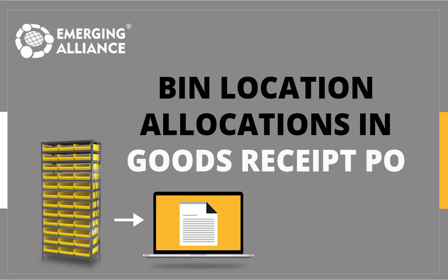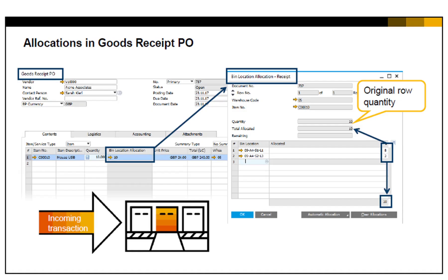In this video, you will get to know in detail about bin location allocations in goods receipt PO. Let us consider a scenario where a company named OEC Computers purchases USB mouse units directly from the manufacturer.